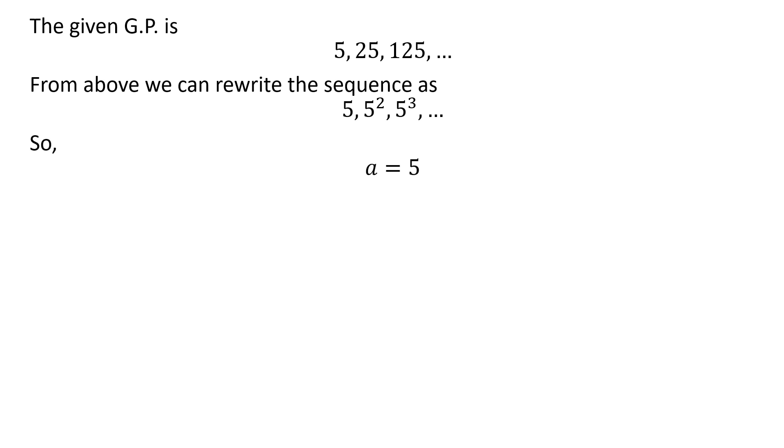From the above series, we can deduce the first term of the GP is 5 and the common ratio r is equal to 5.